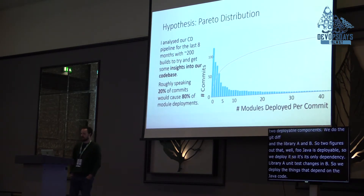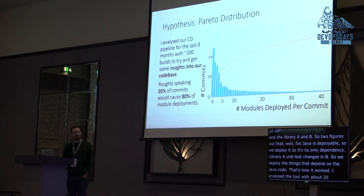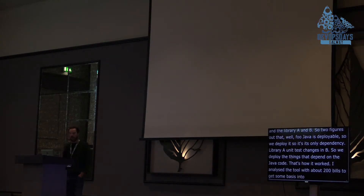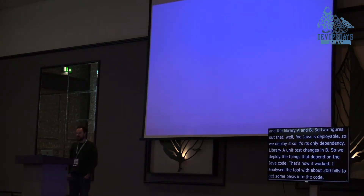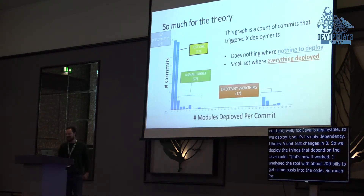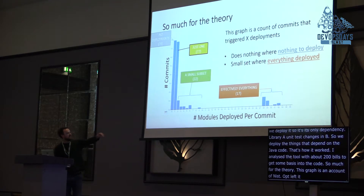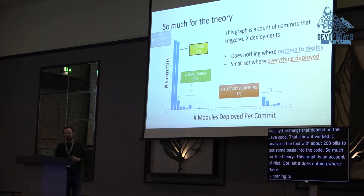I then analyzed our CD pipeline running this tool for the last eight months with about 200 builds to try and get some insights into our codebase. My hypothesis was that 20% of commits will cause 80% of module deployments. Well, so much for the theory. This graph is a count of commits that triggered X deployments. On the left you can see commits that triggered nothing — there's nothing to deploy. That's great. And on the far right you can see it just decided we needed to deploy everything.